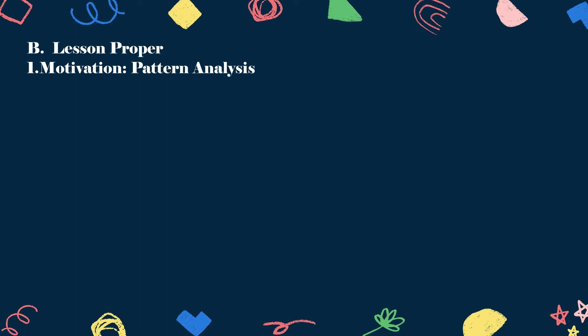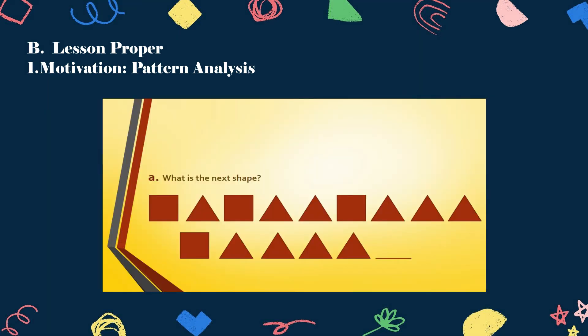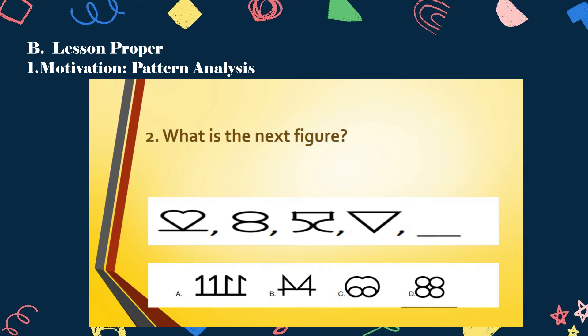Before that, let us first identify these examples. What is the next shape? Correct! Square. How about this one? What is the next figure in the sequence? Correct! It is letter A. Why? Because these sequences consist of prime numbers — 2, 3, 5, 7 — and the next prime number is 11. Letter A. Correct!